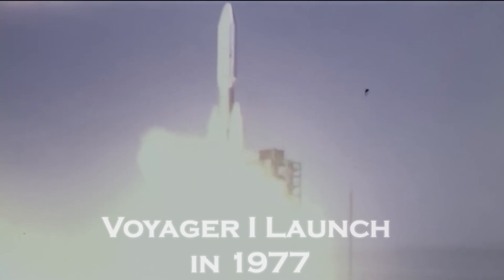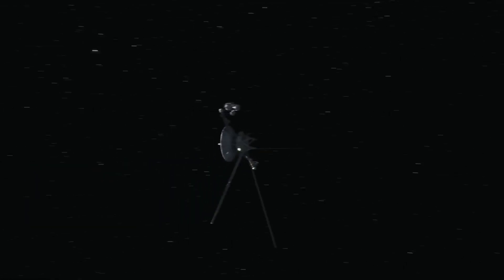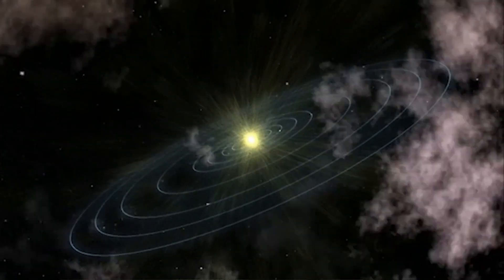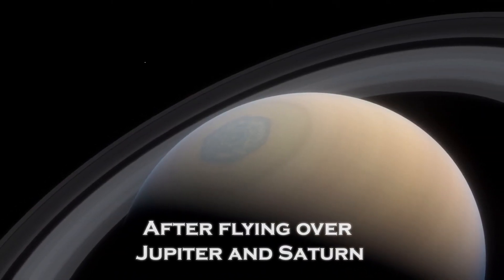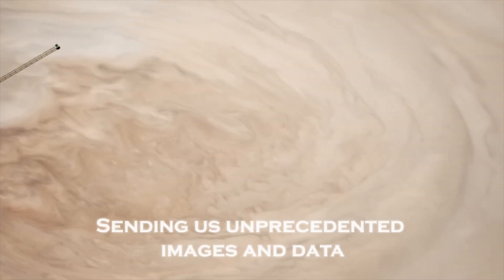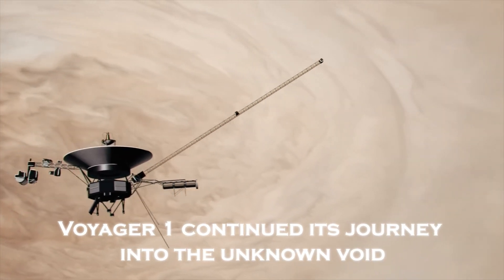Launched in 1997, Voyager 1 had a clear mission to explore the outermost planets of our solar system, collect data, and one day perhaps cross that invisible boundary that separates our solar system from interstellar space. After a flight over Jupiter and Saturn, sending us unprecedented images and data, Voyager 1 continued its journey into the unknown void.